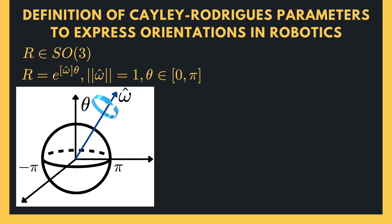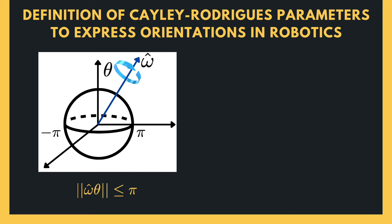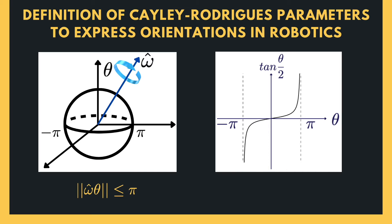The Cayley-Rodriguez parameters, small r in R³, can then be defined as r equal to ω̂ tangent of half θ. If we visualize the space of orientations, or SO(3), as a sphere with a radius of π, the Cayley-Rodriguez parameterization has the effect of infinitely stretching the radius of the sphere via the tangent half-angle function. Recall that the function tangent θ approaches infinity when θ equals π/2 or −π/2. Therefore, tangent of θ/2 approaches infinity when θ equals π or −π.